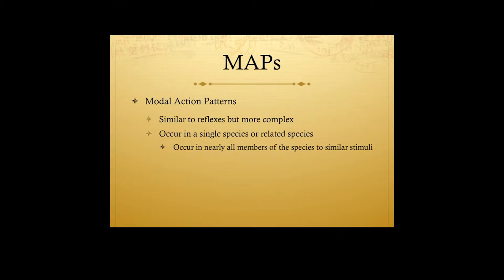Here are the keys. MAPs occur in a single species or related species, and they occur in nearly all members of that species in response to similar stimuli. We say 'nearly all' because we're being accurate — some individuals may have damage, a mutation, or a missing limb and may not display that particular MAP. The response looks the same across the species and even across similar species, such as humans and other higher primates.